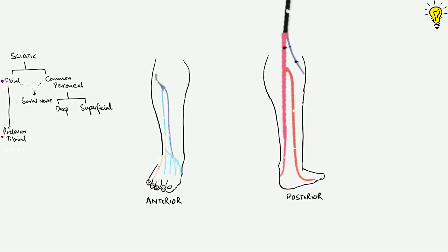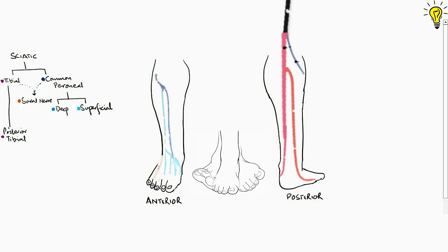Note that all the nerves are sensory-motor except for the sural nerve, which is purely sensory in nature. Now that you know the nerves and their respective parts, you will better relate the dermatomes and movements these nerves bring.